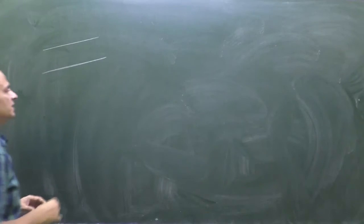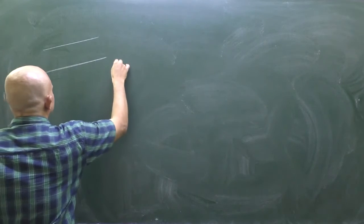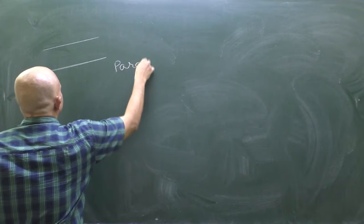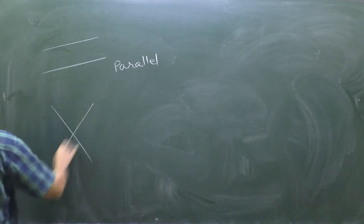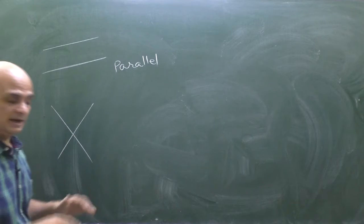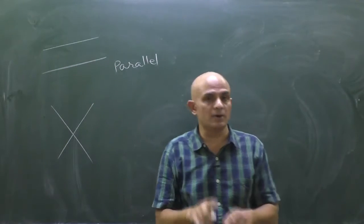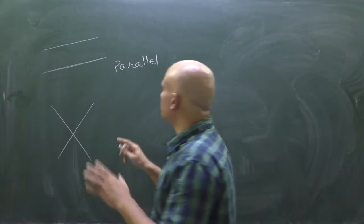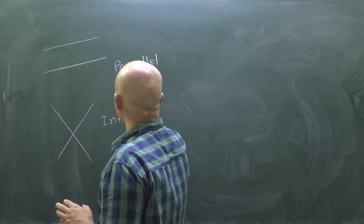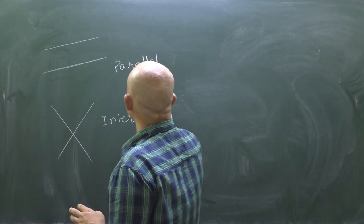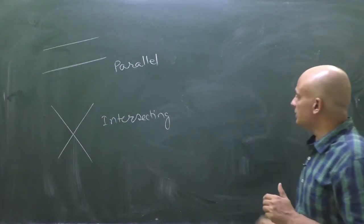These kinds of lines are called parallel lines. If they are not parallel and lying on the same plane, it means they will be intersecting each other — they are called intersecting lines.